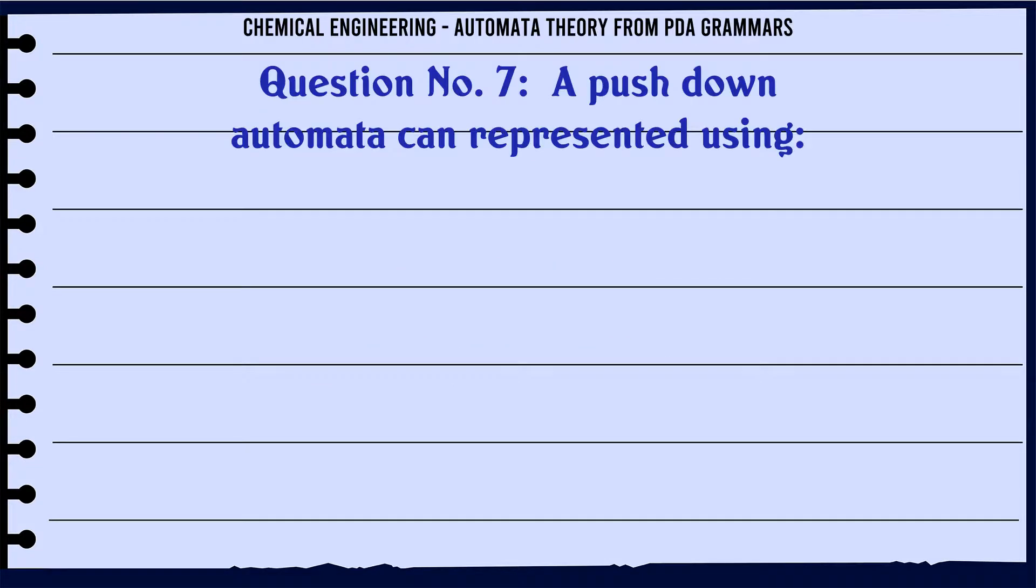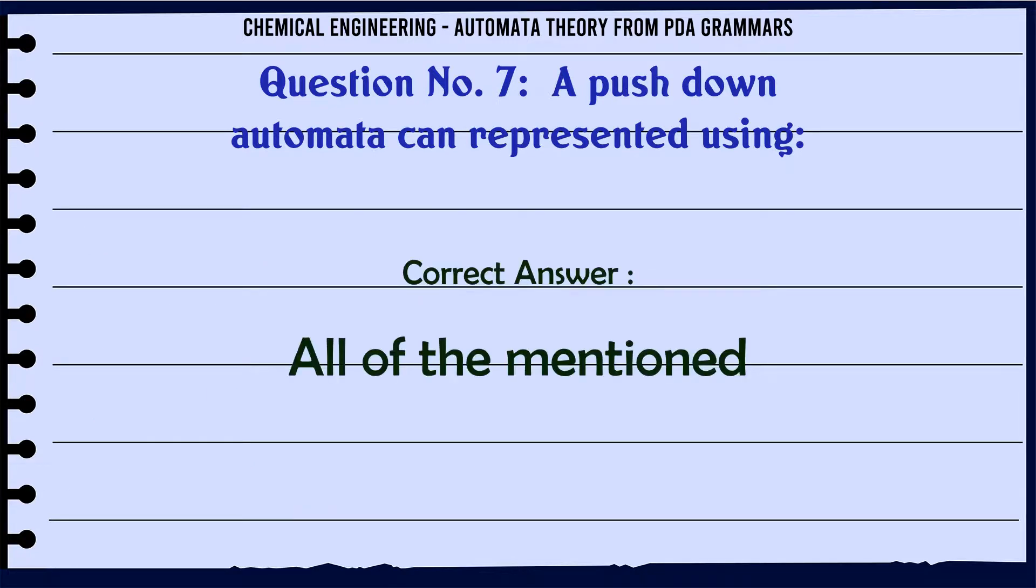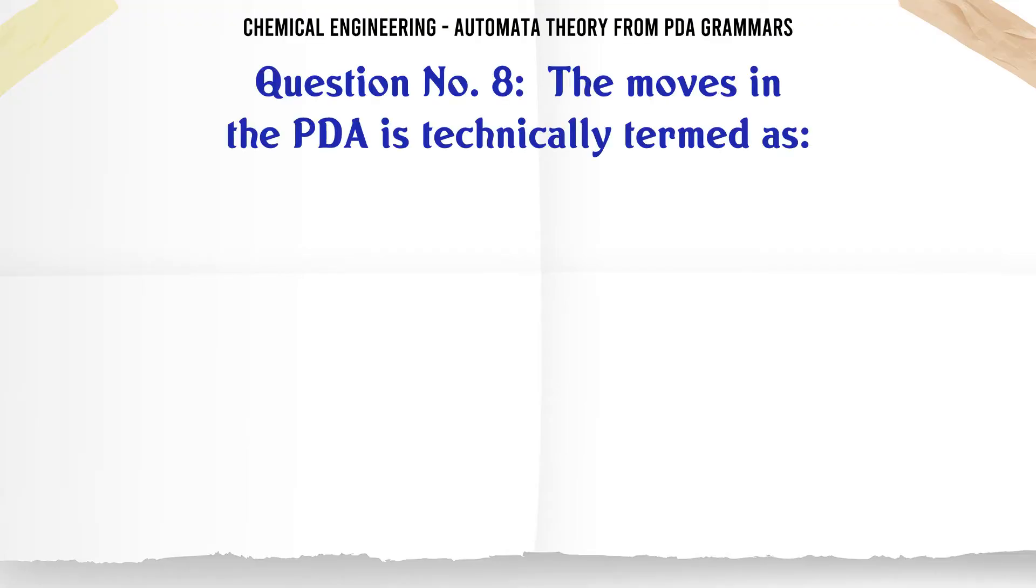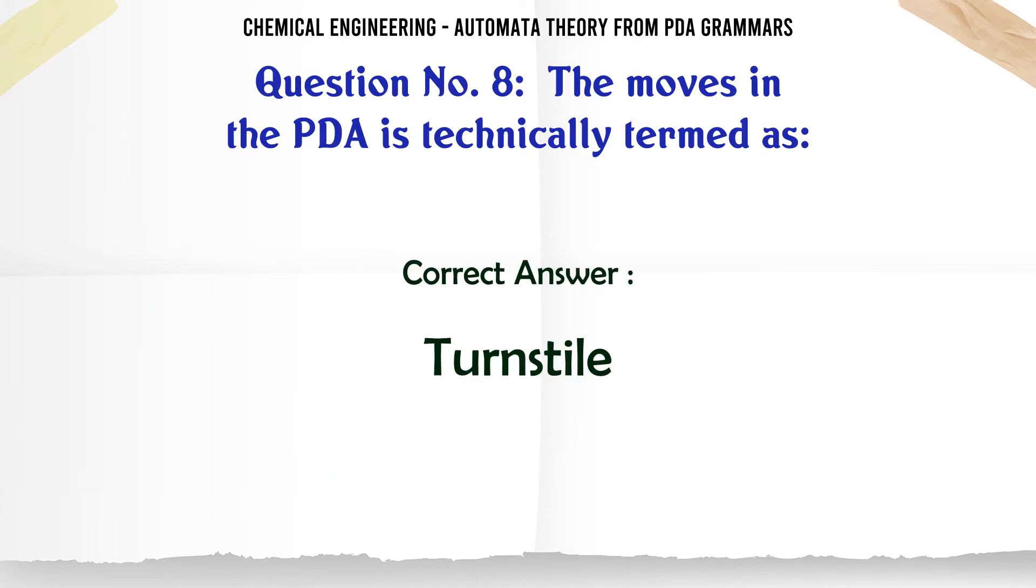A push down automata can be represented using: Option A: Transition graph. Option B: Transition table. Option C: ID. Option D: All of the mentioned. The correct answer is all of the mentioned.